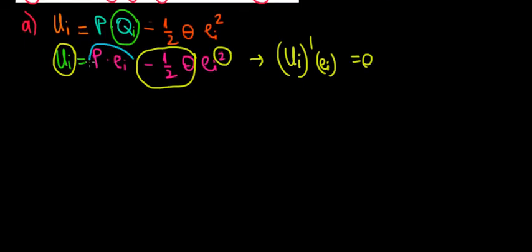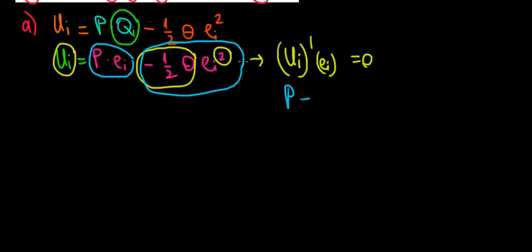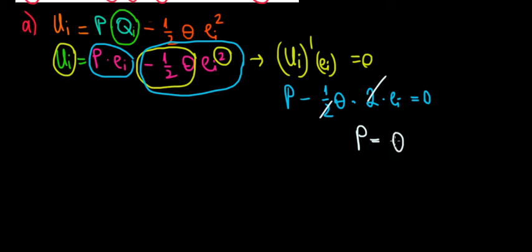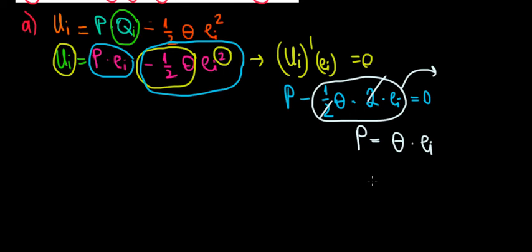Taking the derivative: the first term gives P, and the derivative of one-half theta e squared with respect to e gives theta times e. Setting P minus theta times e equal to zero, the 2s cancel, leaving P equals theta times e_i. Dividing both sides by theta, the optimal effort level of every worker is e* = P over theta.